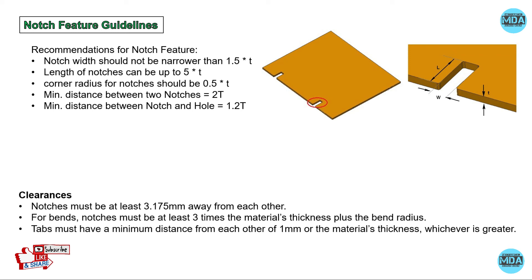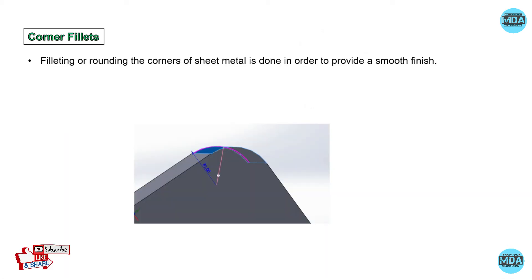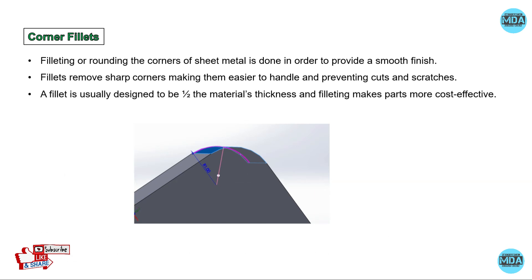A tab must have a minimum distance from other tabs of 1 mm or material thickness, whichever is greater. A tab is a protrusion from the edge of the sheet metal part. The corner radius is used to provide a smooth finish and avoid sharp corners for easier handling — the fillet is usually designed to be half of the material thickness.